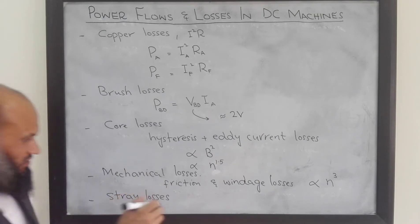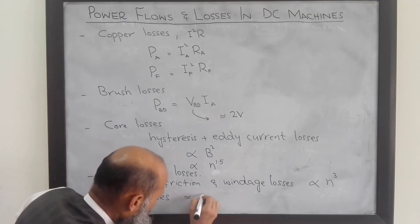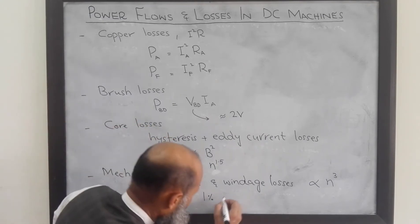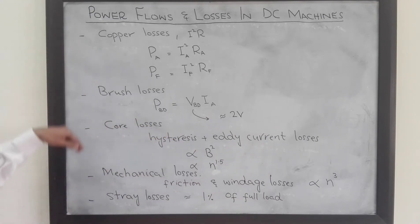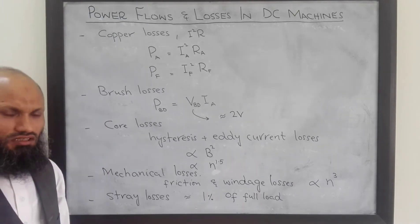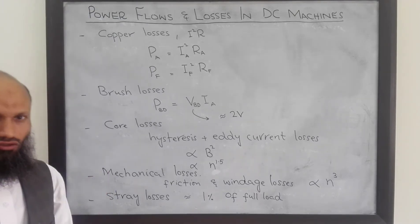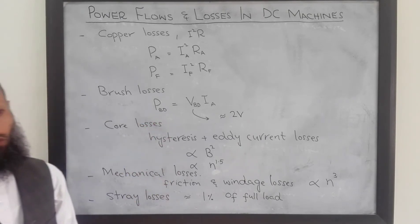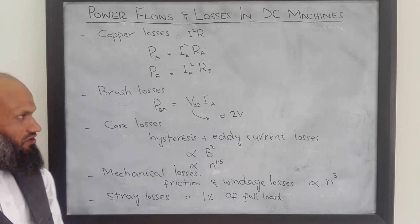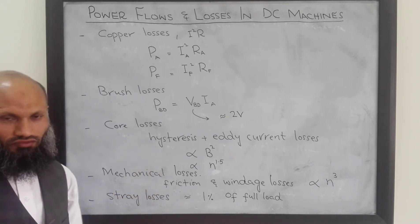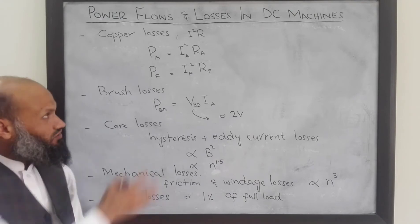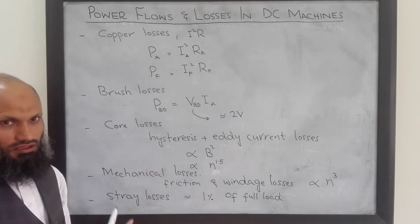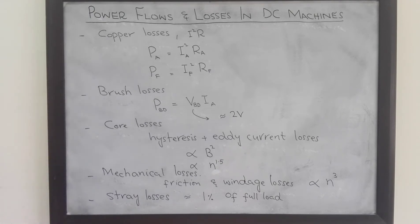Stray losses are generally taken to be approximately equal to 1% of the rated power of the machine. These are the losses present in DC machines. Sometimes we draw power flow diagrams for electrical machines, which give a more detailed description of where these losses occur. Let's draw the power flow diagrams for a DC generator and a DC motor.